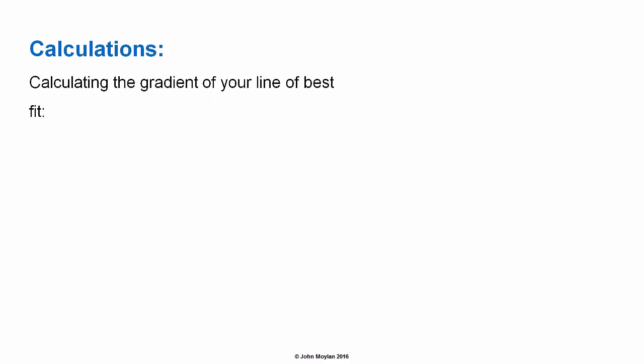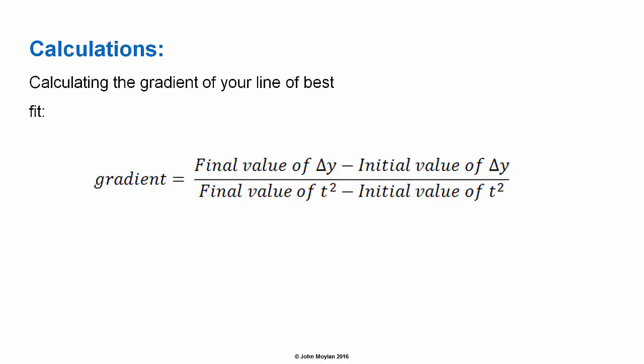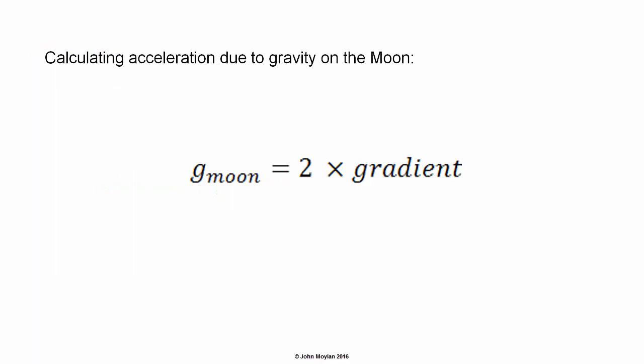To calculate the gradient of your line of best fit: gradient equals (final value of Δy minus initial value of Δy) divided by (final value of t² minus initial value of t²). Your line of best fit should pass through the origin, therefore your gradient will be equal to the final value of Δy over the final value of t².